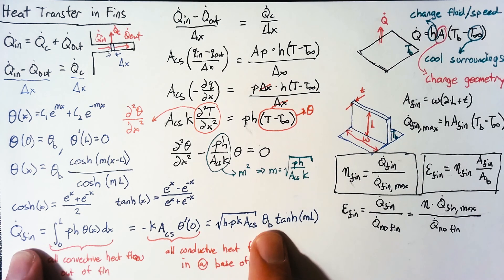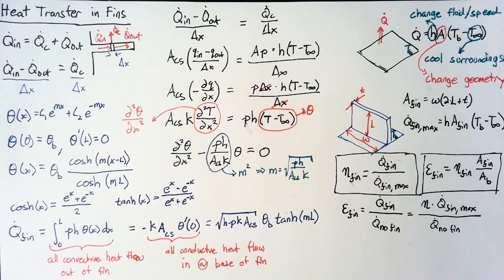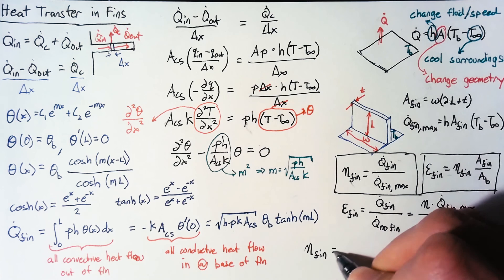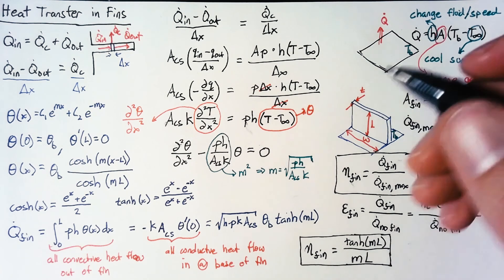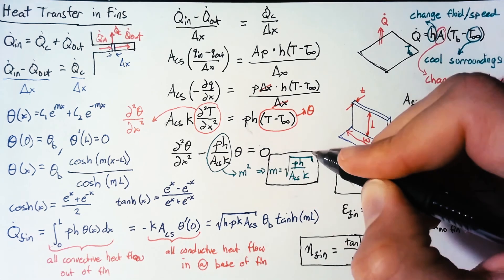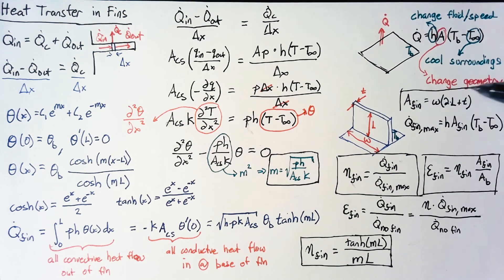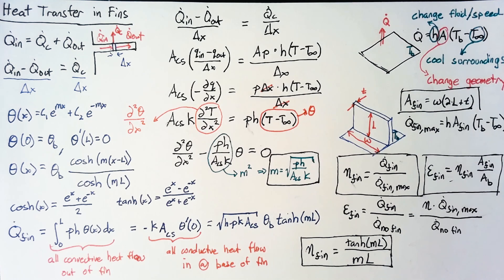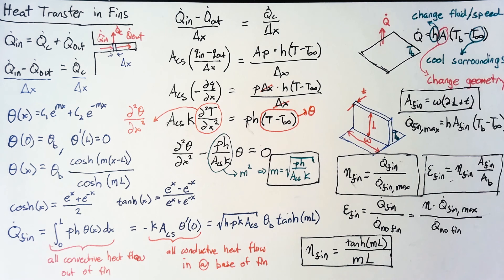Once we have a value for this heat transfer, we can plug it into our fin efficiency. The result is that the efficiency equals tanh(mL) divided by mL. The key pieces needed are the fin area for effectiveness, this efficiency formula, and the definition of m, which appears in multiple places. With all these pieces together, we can determine for a given geometry what the heat transfer rate is and how effective the fin is at increasing the cooling rate.